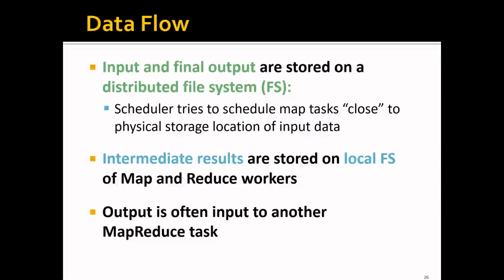Storing intermediate results locally is mainly to avoid expensive network traffic, since some operations like the partitioning function and producing intermediate key-value pairs are better done locally. Finally, the output is often used as input for another MapReduce task.